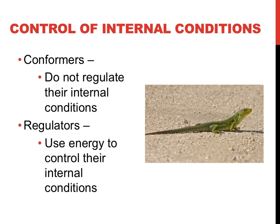There are two general strategies that an organism can employ when the environment changes. First, an organism can go with the flow, so to speak, and change their internal conditions with the environment. Ectotherms, or cold-blooded animals, would provide an example of this type of strategy called conforming. In the picture to the right, you can see a lizard sitting out in the sun during the day to heat up its body.